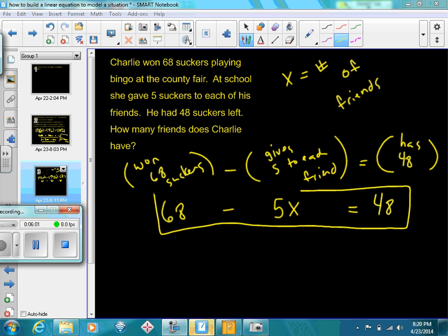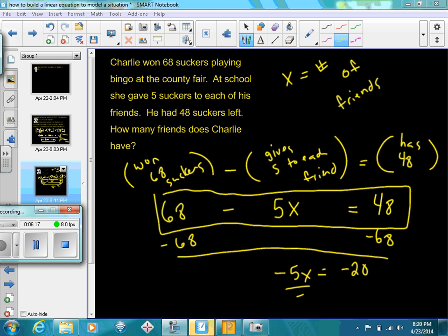We're trying to figure out how many friends does he have, since we're given specifically that he's got 48 suckers left over. This is what I would want you to be able to construct, something close to this. If you wanted to figure it out, subtract 68 from both sides, and we get negative 5x equals negative 20. Divide both sides by negative 5, and suddenly we're able to find out that yeah, he's got 4 friends that he had at school that he was splitting up all of the suckers with.